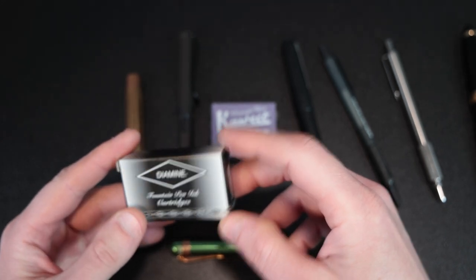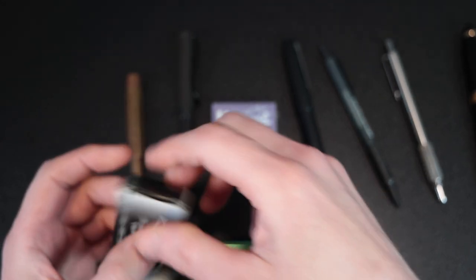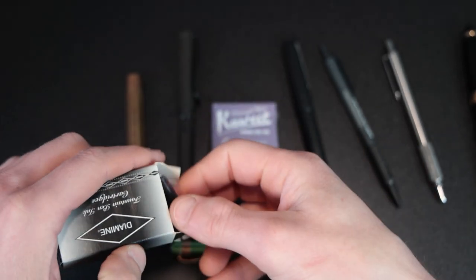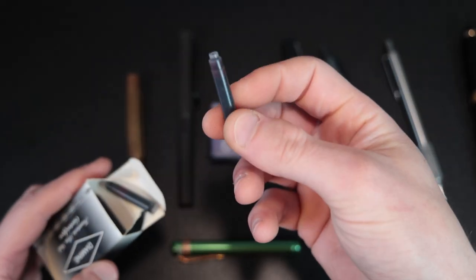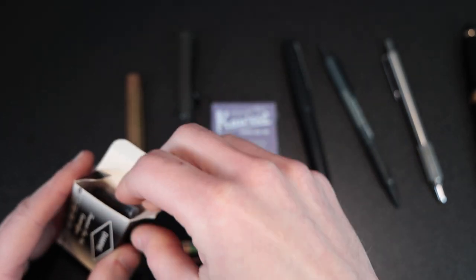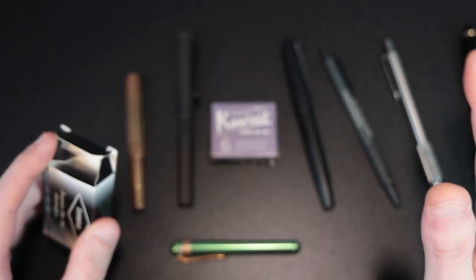You can also use any other standard international cartridges short. So this is the Diamine, what is this? Ancient copper. So basically the exact same form factor as the Cavecos. So that's nice. You have a good variety of different inks that you can use. They're just the standard international short though.